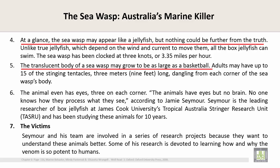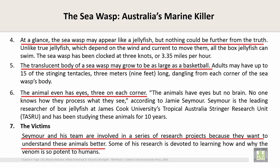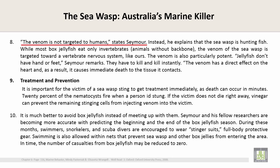The first sentence in paragraph five is: 'The translucent body of a sea wasp may grow to be as large as a basketball.' The first sentence in paragraph six is: 'The animal even has eyes — three on each corner.' The first sentence in paragraph seven is: 'Samor and his team are involved in a series of research projects because they want to understand these animals better.'